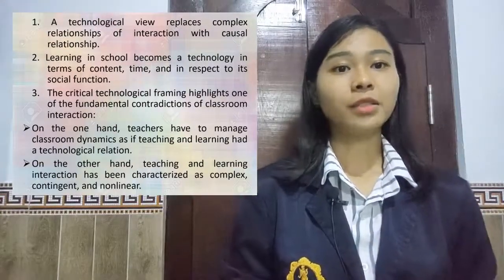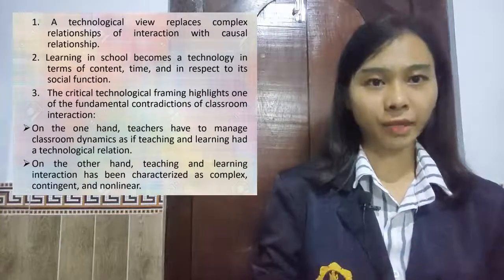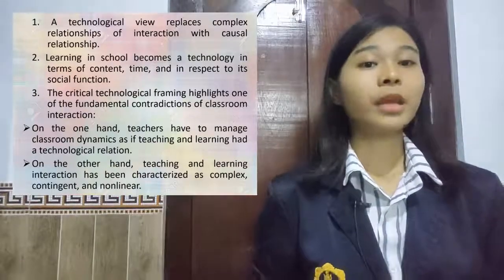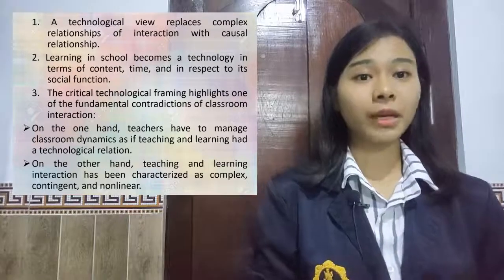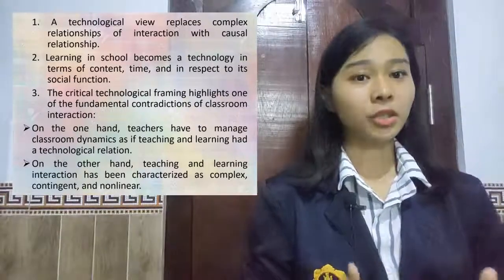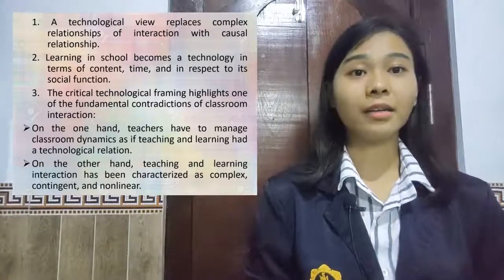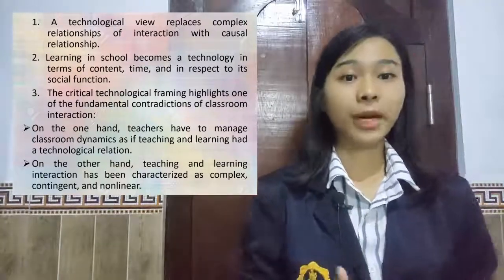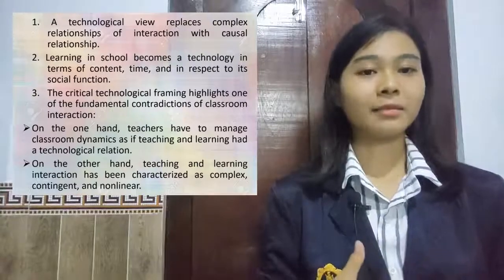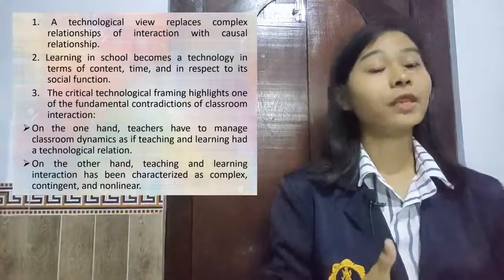The social function of teaching and learning is to produce individuals that society calls for — individuals that display socially desired character traits and are skilled in specific subject areas. In contrast to the conceptual framing of teaching and learning as a complex system, this critical technological framing highlights one of the fundamental contradictions of classroom interaction. On the one hand, teachers have to manage classroom dynamics as if teaching and learning had a technological relation. On the other hand, teaching and learning interaction has been characterized as complex, contingent, and non-linear. This characteristic points to fundamental problems of a technological framing of teaching and learning.